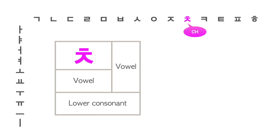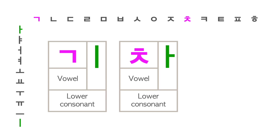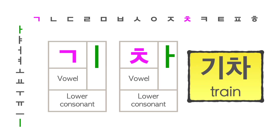This is the consonant 치읒, which represents the CH sound. Putting the vowel 아 with the consonant 치읒 makes the letter 차. Adding this letter to the second letter of 아기 makes the word 기차, which means train.